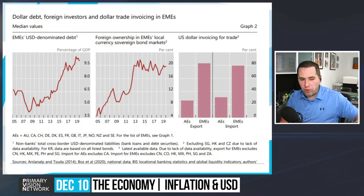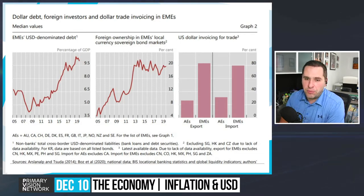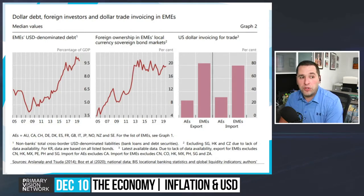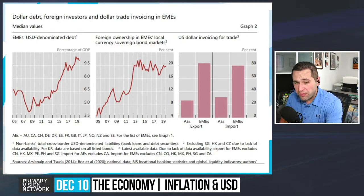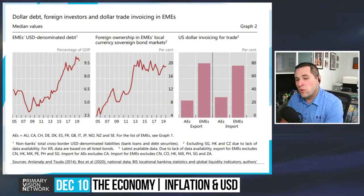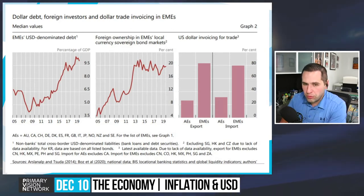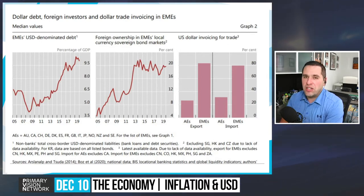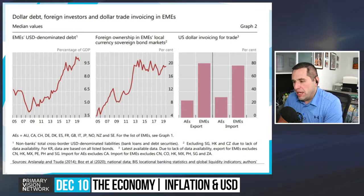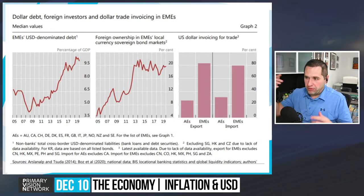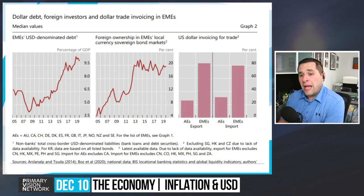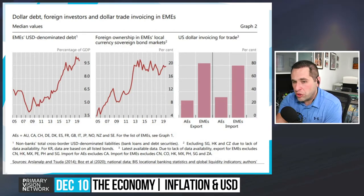We've talked about US dollar-denominated debt, and here we're looking at it as a percentage of GDP. About 10% of GDP is tied up in US dollar-denominated debt, which is why dollar strength and weakness is so important. Foreign ownership of emerging market economies' local currency sovereign bond markets is about 20%. If I have FX reserves — say 70% in dollars, 15% in euros, and a mix of other currencies and gold — I'm going to front-load US dollar invoicing.